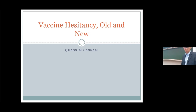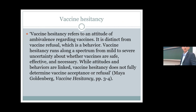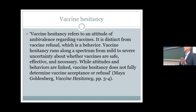The topic of today's talk is vaccine hesitancy. Here is a definition from Maya Goldenberg's recent book: vaccine hesitancy refers to an attitude of ambivalence regarding vaccines. It is distinct from vaccine refusal, which is a behavior. Vaccine hesitancy runs along a spectrum from mild to severe uncertainty about whether vaccines are safe, effective, and necessary. While attitudes and behaviors are linked, vaccine hesitancy does not fully determine vaccine acceptance or refusal.